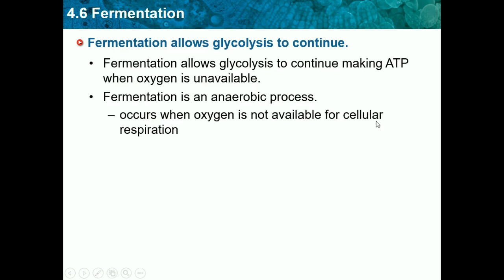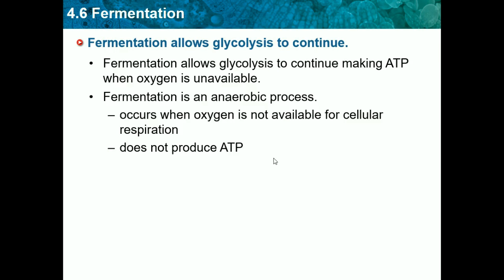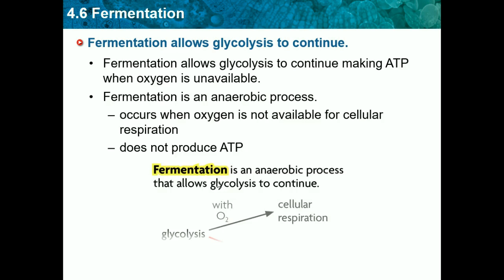If we did have oxygen, we would go straight into cellular respiration. But if we don't, we go into fermentation. We need to know that fermentation does not produce ATP — all it does is let glycolysis continue. It lets the cycle restart. After one round of glycolysis, you run out of the resources to do it again, so fermentation uses up what you get from glycolysis and regenerates what you need to run glycolysis again.